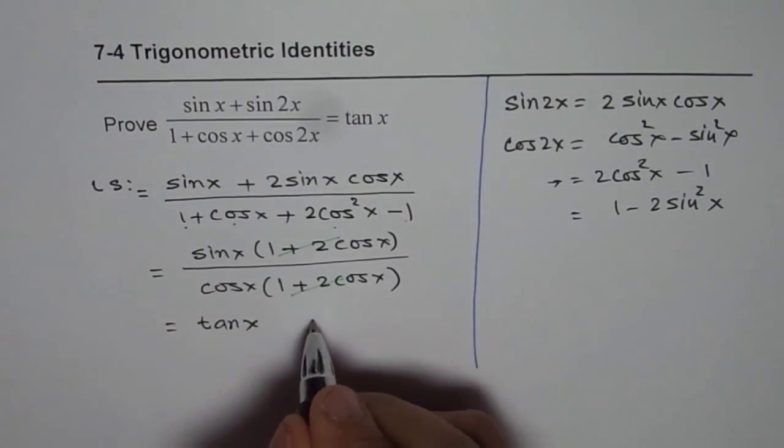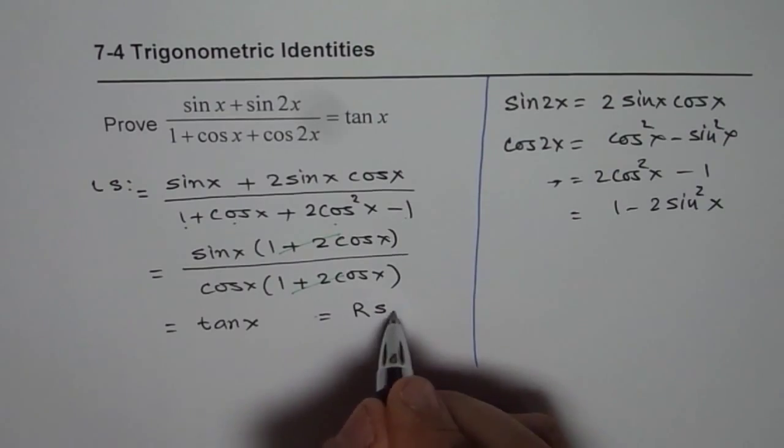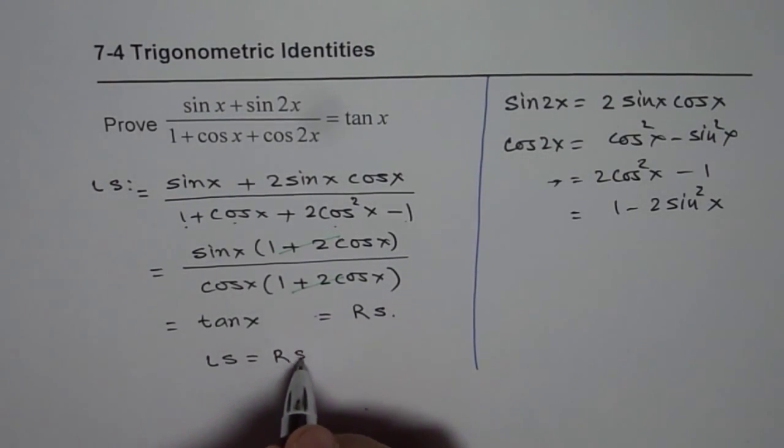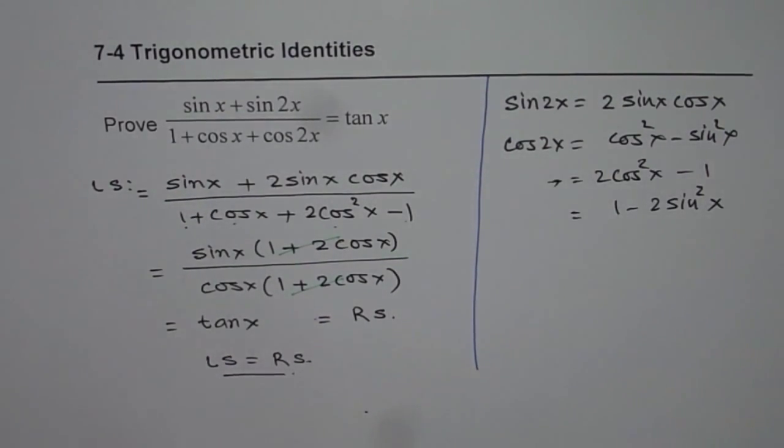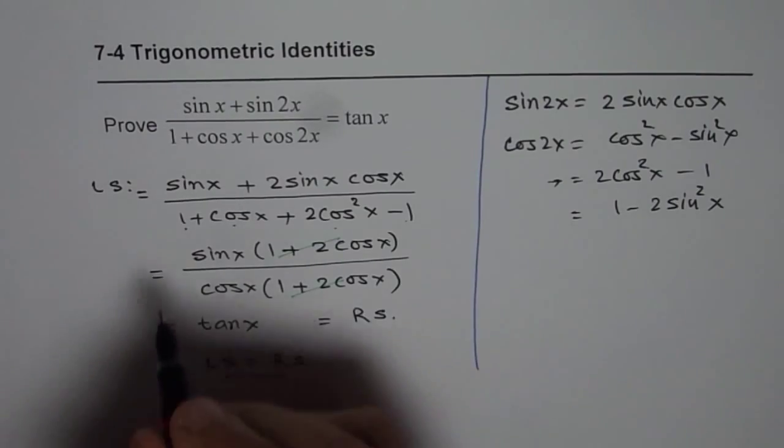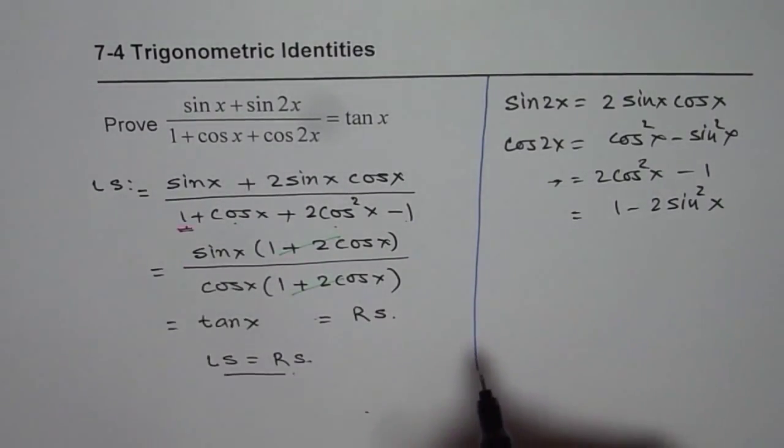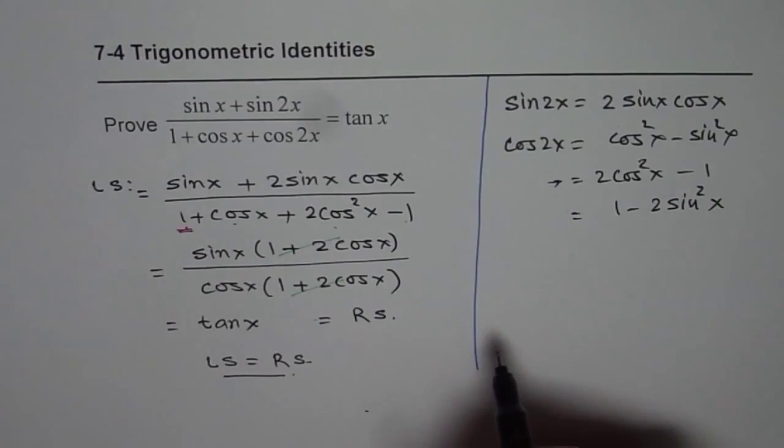Now tan x is what we have in right side. So we have left side equals to right side. And that is how we prove the identities. I hope these simple steps take you and remind you of how to simplify and then prove the identities.